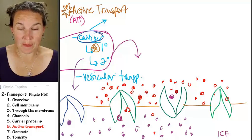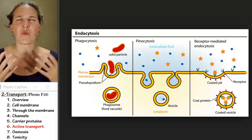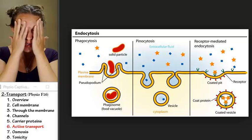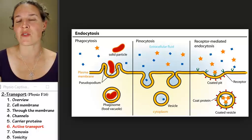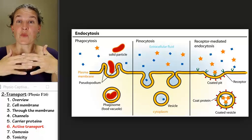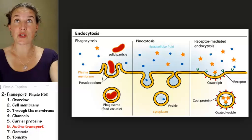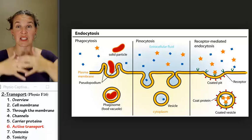We also have vesicular transport, and I've got a couple pictures for you of what that is, because it's kind of hard to visualize and certainly hard for me to draw. Vesicular transport means we're making vesicles. We're either using vesicles to get stuff out of the cell, or we're using vesicles to get stuff into the cell. And endocytosis is bringing stuff in.